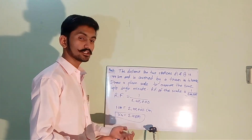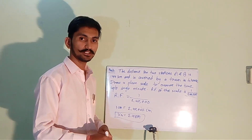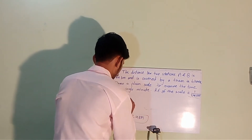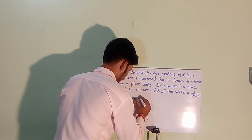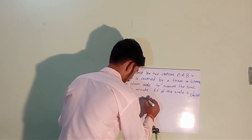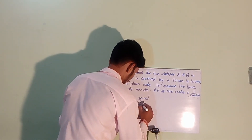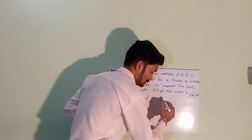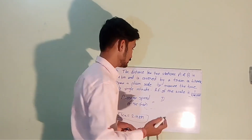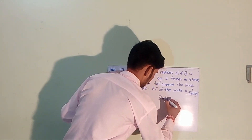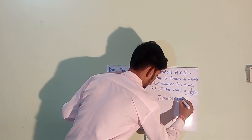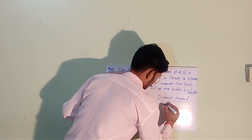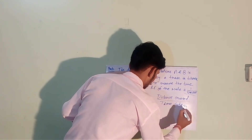To convert it into minutes, we will need to calculate the average speed of the train. The average speed of the train is simply distance covered divided by time taken. The distance is 144 kilometers and the time is 4 hours, giving an average speed of 36 kilometers per hour.